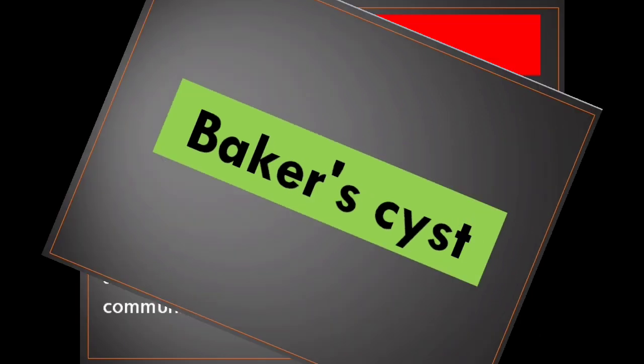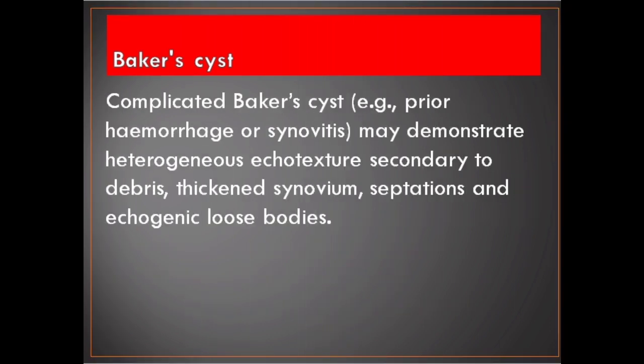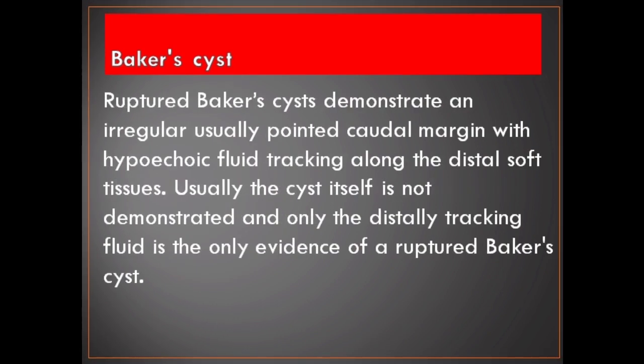Baker's cyst. Baker's cysts are located in the medial aspect of the popliteal fossa and appear on ultrasound as anechoic, well-defined cystic masses with smooth and rounded margins, often with obvious origin between the medial head of the gastrocnemius and the semimembranosus tendon, and a communicating neck with the knee joint. Complicated Baker's cyst — for example, prior hemorrhage or synovitis — may demonstrate heterogeneous echotexture secondary to debris, thickened synovium, septations, and echogenic loose bodies. Ruptured Baker's cysts demonstrate an irregular, usually pointed caudal margin with hypoechoic fluid tracking along the distal soft tissues.